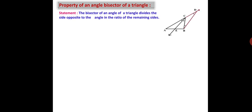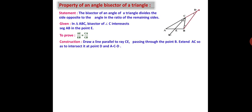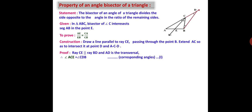Let us consider this figure, where the brown color segments indicate the constructive part. From the figure and the statement, in triangle ABC, the bisector of angle C intersects segment AB at point E. To prove: AE/AB = CE/CB. Construction: draw a line parallel to ray CE passing through point B, and extend AC to intersect it at point D, with A-C-D as the betweenness.